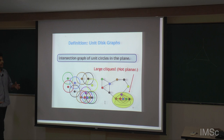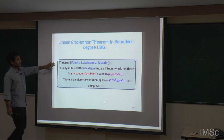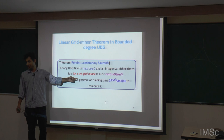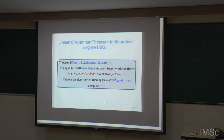Now the proof sketch. Towards this we use a theorem: a linear grid minor theorem for unit disk graphs of bounded maximum degree. For unit disk graphs with bounded max degree delta, either we get a W×W grid or the tree width is at most O(W · delta^3). Assuming delta is a constant, this is a linear grid minor theorem. And this can be computed in single-exponential-in-W time.